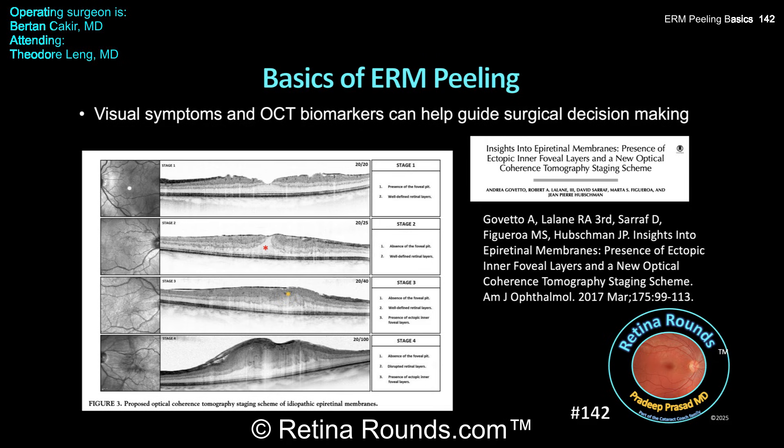In the stage 3 OCT, ectopic inner foveal layers overlying the fovea are highlighted by the yellow star. The stage 4 ERM additionally shows disorganization of the inner layers of the retina, which is very similar to the ERM presented in today's video.